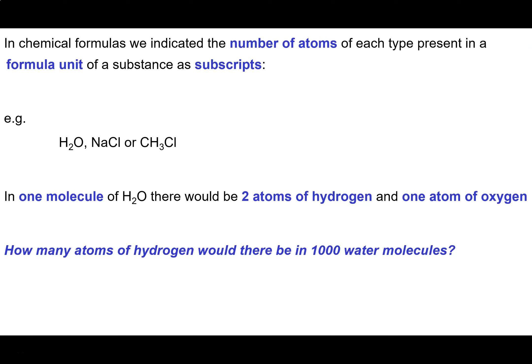In chemical equations, we indicate the number of something by using what we call coefficients. In a formula, these are indicated as subscripts — you see them here. We never put a subscript as a one, because the presence of the symbol is indicative that there is at least one of the substance present. So we would never write something like this.